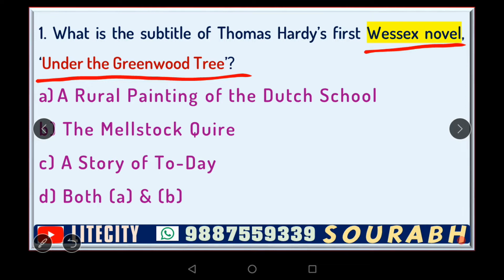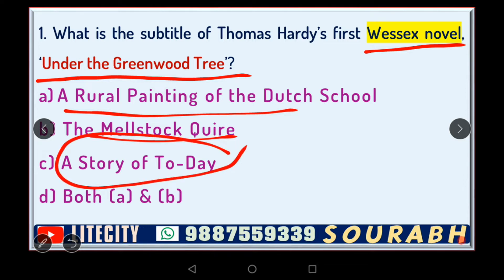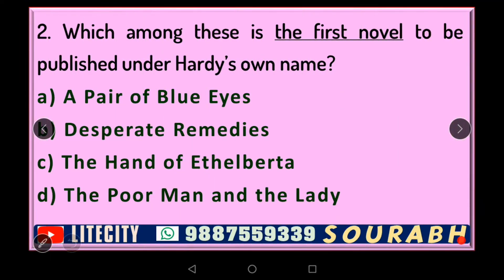Quite interestingly, it is not one but both A and B — these were both subtitles of the novel 'Under the Greenwood Tree.' I would also like to add that 'A Story of Today' is a subtitle, although not of 'Under the Greenwood Tree' — it is the subtitle of another Hardy novel, 'A Laodicean.' So the answer here is D: both A and B.